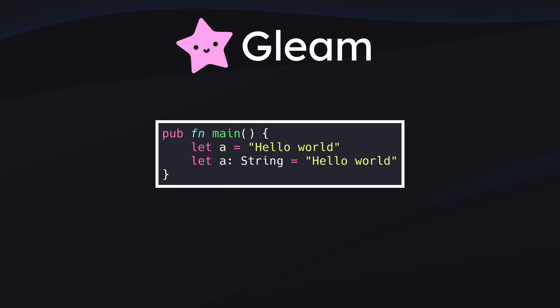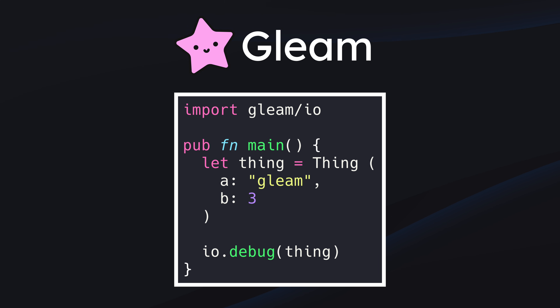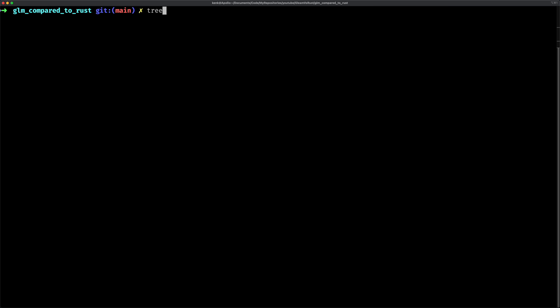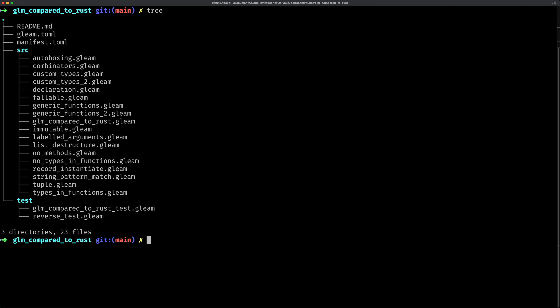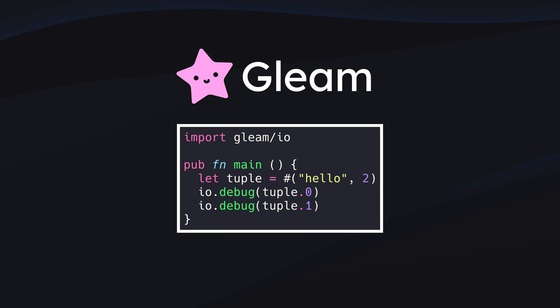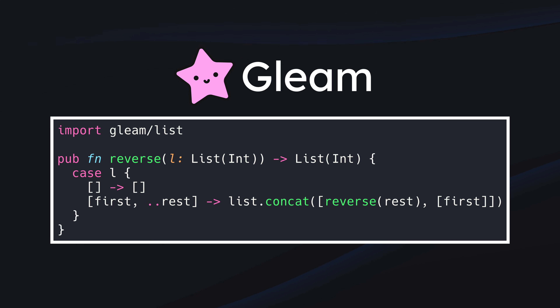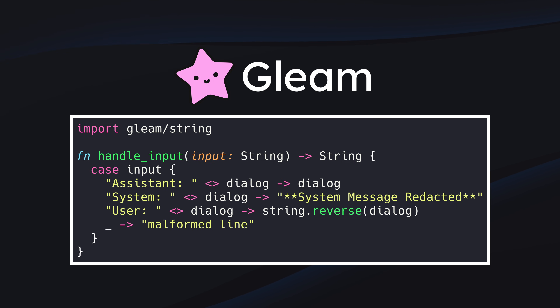Gleam has a lot in common with Rust, but at times there are some subtle differences. The syntax for declaring variables is pretty much identical, including the ability to have an explicit type. When creating a record — basically the equivalent of a struct — Gleam has you surround the fields with parentheses instead of curly braces. Modules work mostly the same way, but Gleam doesn't require mod statements to define the module hierarchy; it lets the hierarchy be controlled by the directory tree and file names. Tuples work mostly the same way as Rust but are prefixed with a pound sign. Gleam has case statements, which are basically the same as match statements in Rust, and you get all the nice pattern matching including destructuring of records, lists, and string destructuring.